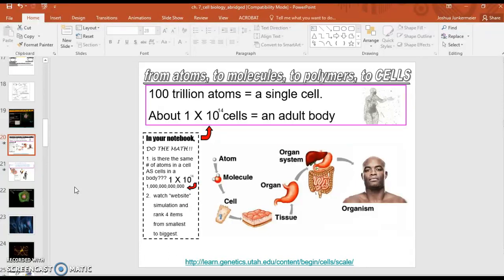That means it takes hundreds of trillions of atoms to make one cell. And then if you think about it, even though it takes that many atoms to make one cell, our body is actually made up of 1 × 10^14 cells. That's a lot of atoms to make a lot of cells. It says, do the math. It says, is there the same number of atoms in a cell as cells in the body?